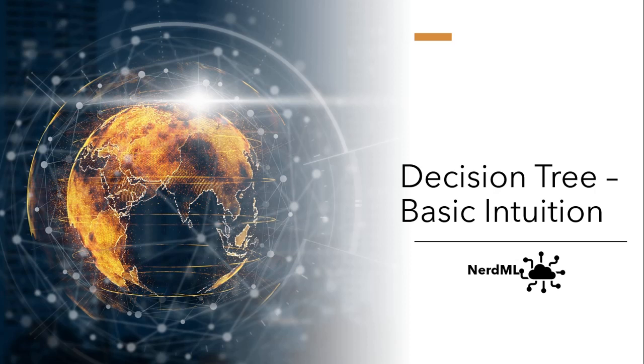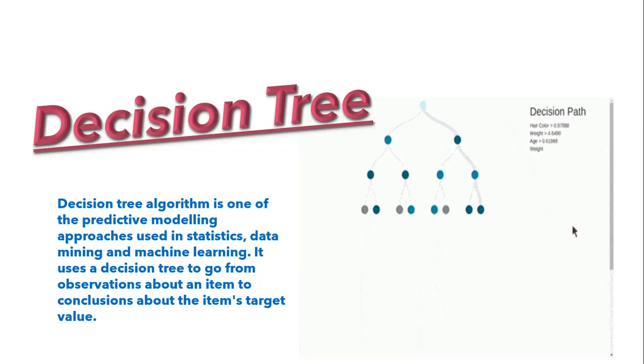But today what I am going to discuss will be more interesting as I come up with decision tree algorithm. This algorithm is one of the most popular machine learning algorithms used for both classification and regression tasks. As always, I will try to cover all aspects of this algorithm including problem solving using both classification and regression approaches.